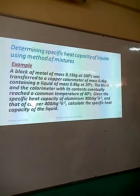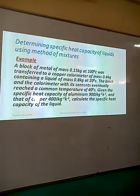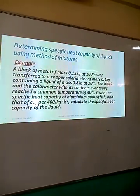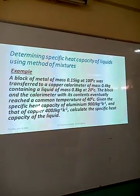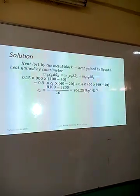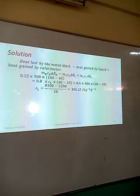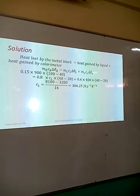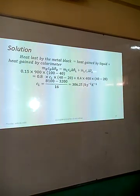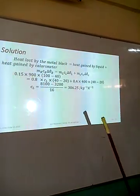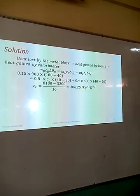Consider this example: a metal block of mass 0.15 kg at 100 degrees Celsius was transferred to a copper calorimeter of mass 0.4 kg containing a liquid of mass 0.8 kg at 20 degrees Celsius. The block, calorimeter, and its contents eventually reached a common temperature. Given that the specific heat capacity of aluminium is 900 and that of copper is 400 J/kg/K, calculate the specific heat capacity of the liquid. We equate heat lost by the metal block (mc delta theta with subscript B) to heat gained by the calorimeter (mc delta theta with subscript C) plus heat gained by the liquid (mc delta theta with subscript L), then solve for c_L, which gives approximately 3,650 J/kg/K.